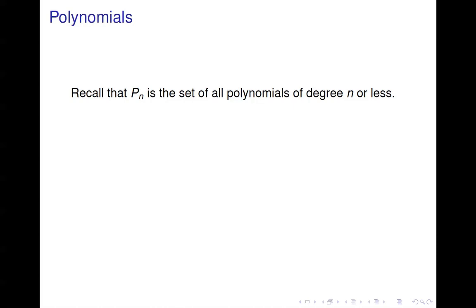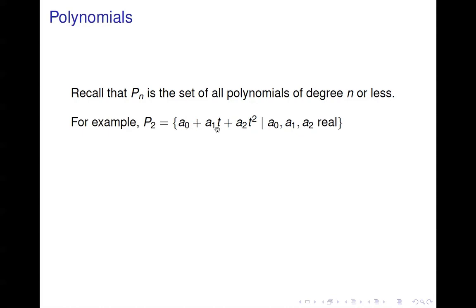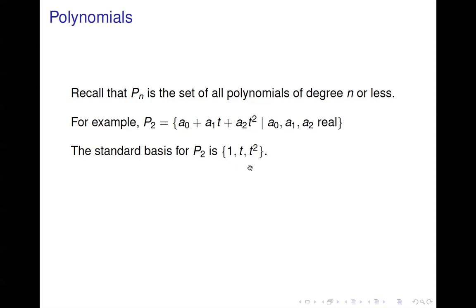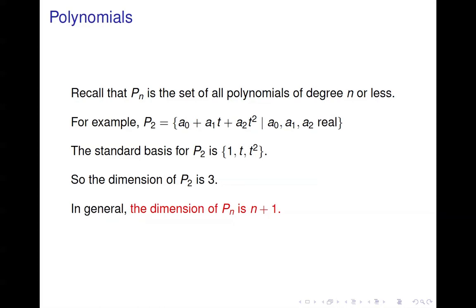Let's talk about polynomials. P sub n is the set of polynomials of degree n or less. For example, P sub 2 consists of all polynomials that are quadratic or less — all polynomials that look like a₀ plus a₁t plus a₂t², where the a values are real numbers. The standard basis for P sub 2 is the set {1, t, t²}. Any polynomial in P sub 2 can be written as a linear combination of these three objects, so the dimension of P sub 2 is 3. In general, the dimension of P sub n is n plus 1.